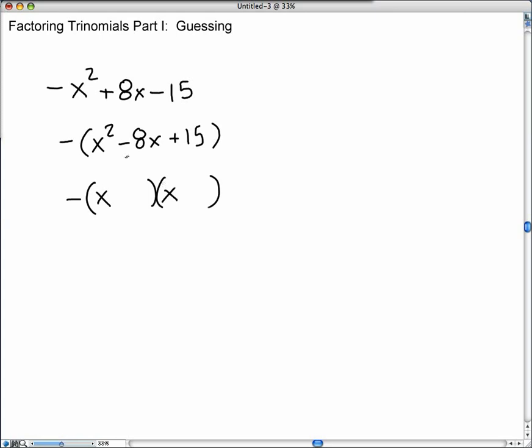The signs, well, the linear term is negative 8x. And so we take the sign, negative. We take the sign of the linear term, the sign of the constant. And we take the product of those two, negative times a positive. It's going to be negative, so two negatives.